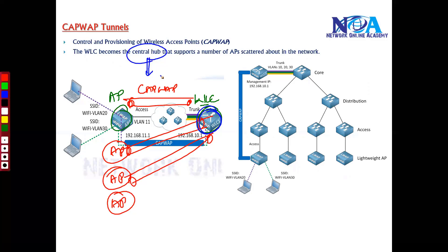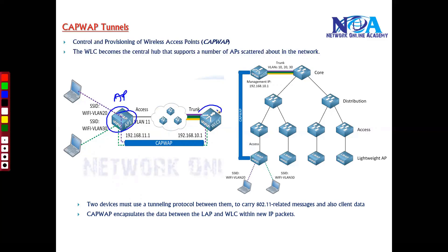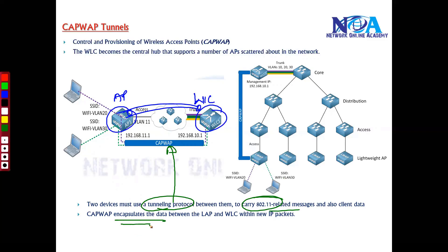You may have hundreds or thousands of access points scattered across your network, and every access point must build a CAPWAP tunnel after both the AP and WLC discover and join each other. CAPWAP is a tunneling protocol that carries 802.11-related messages and client data, encapsulating the data between the access point and the WLC within IP packets.